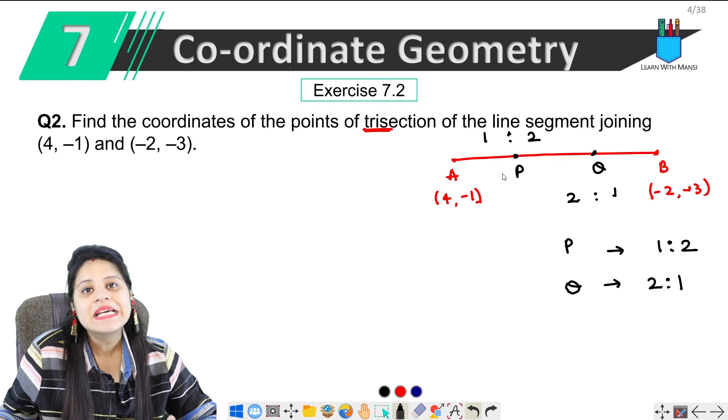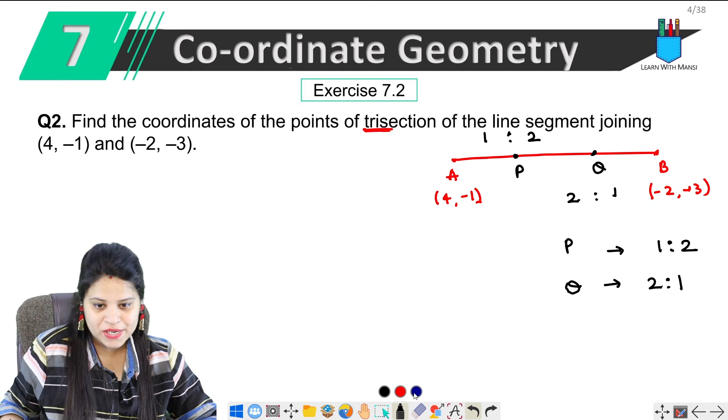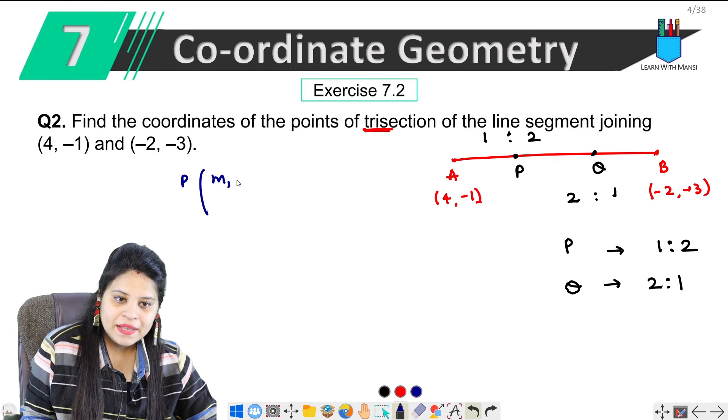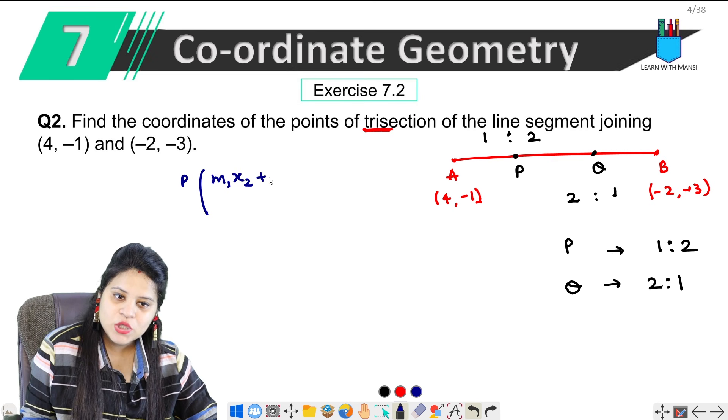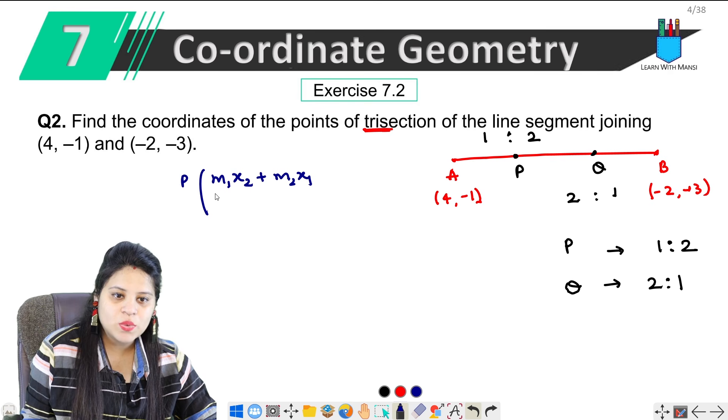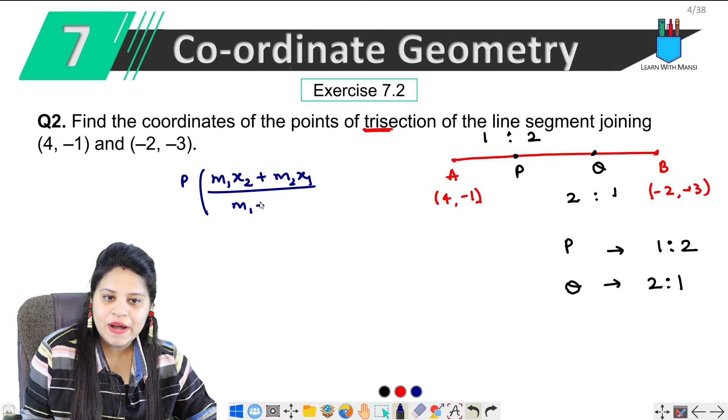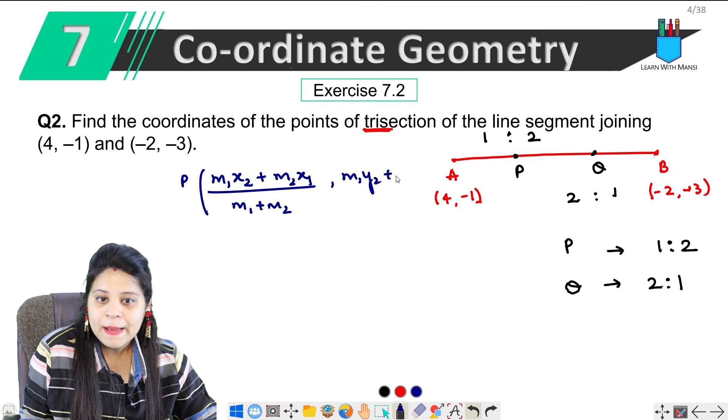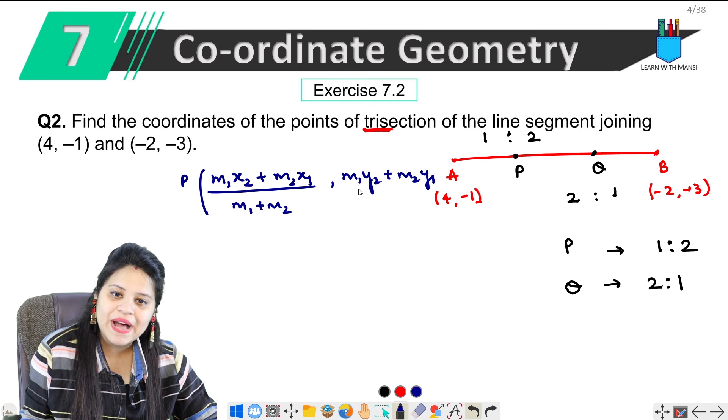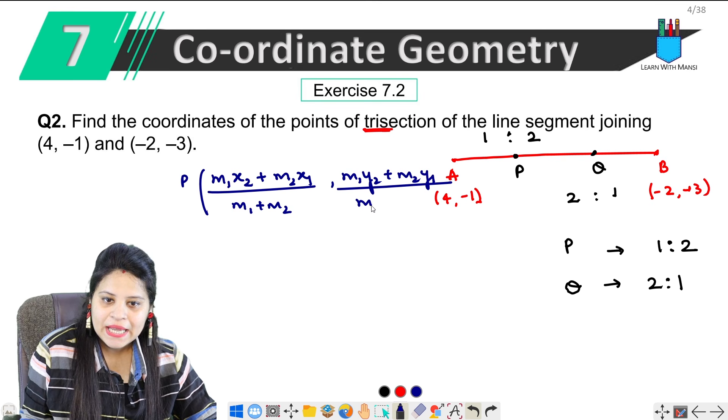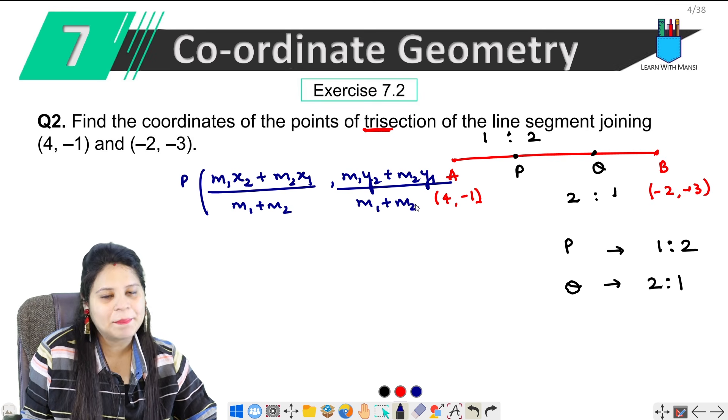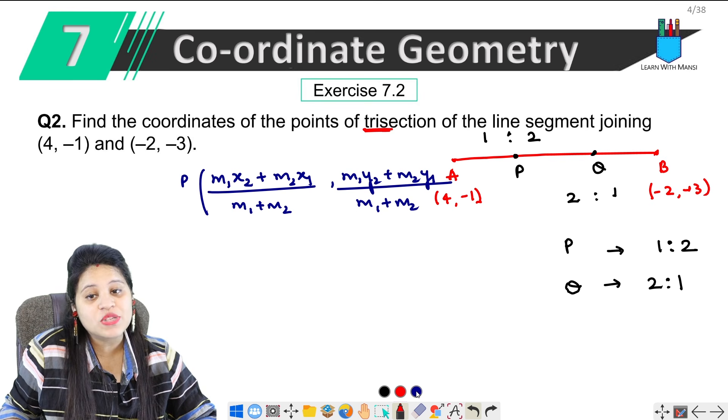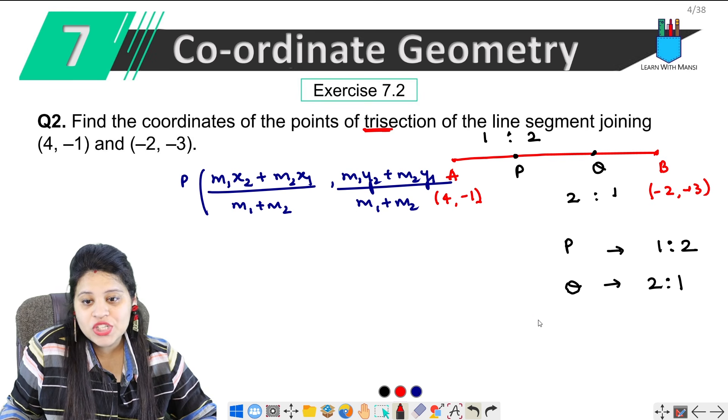Coordinates kaise nikalenge? Simple, apna section formula use karke. P ke coordinates nikalenge. m1x2 + m2x1 upon m1 + m2, then we have m1y2 + m2y1 upon m1 + m2.